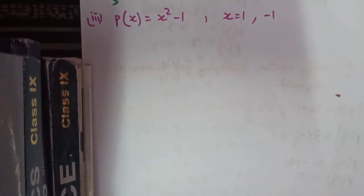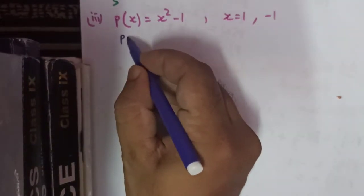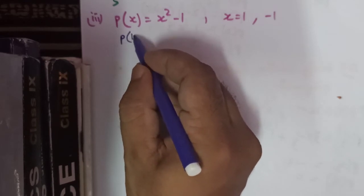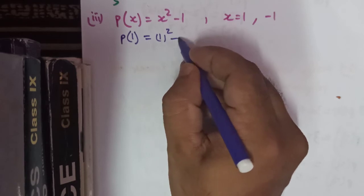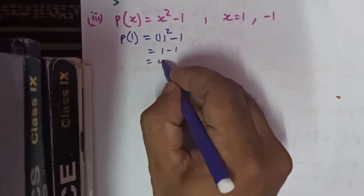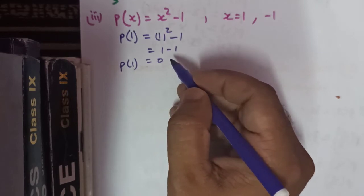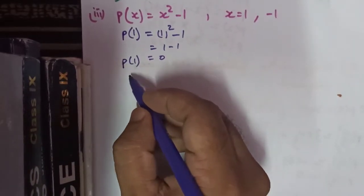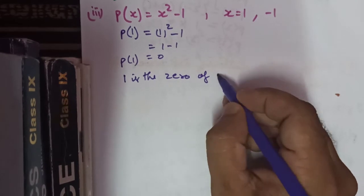Now we check whether 1 and minus 1 are zeros of a quadratic polynomial. Remember, a quadratic polynomial has two zeros. Substituting x equals 1 in p(x) equals x squared minus 1: p(1) equals 1 squared minus 1 equals 1 minus 1 equals 0. So yes, 1 is the zero of the given polynomial x squared minus 1.